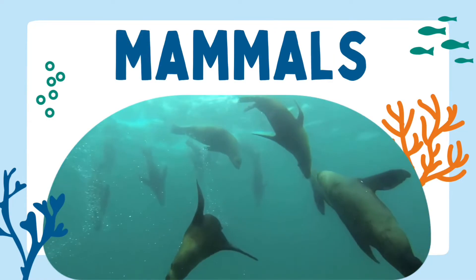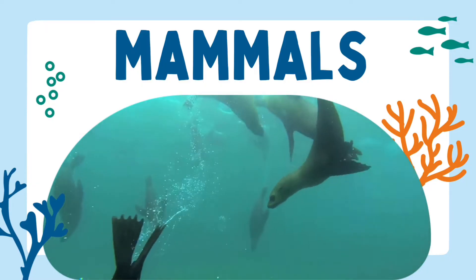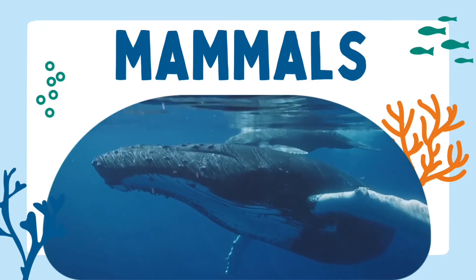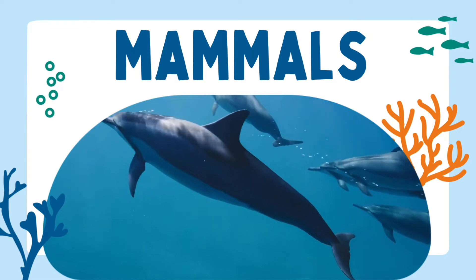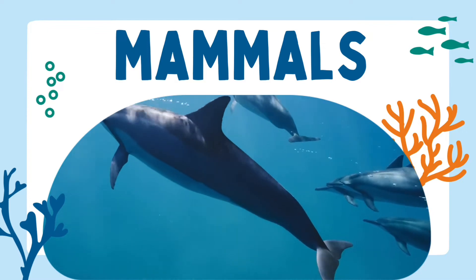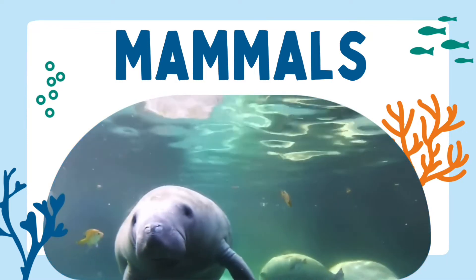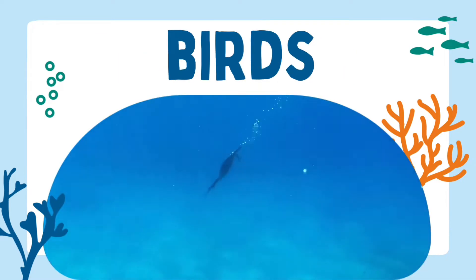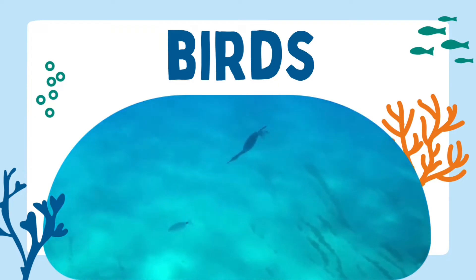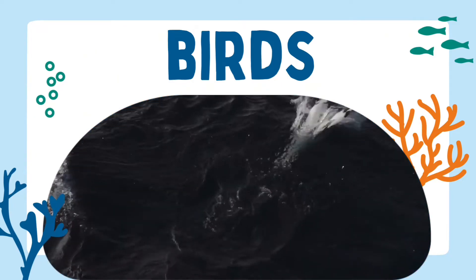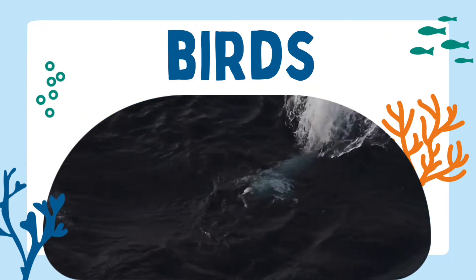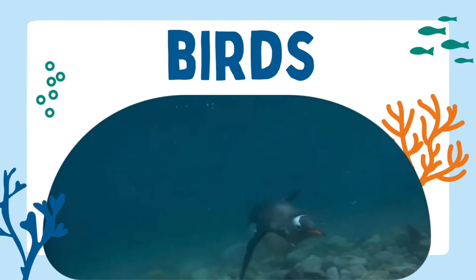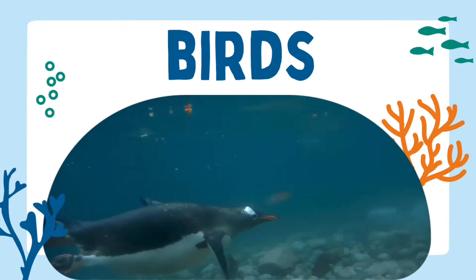Apart from fish, many other animals can be found living in or around the sunlight zone. Some marine mammals include whales, dolphins, seals and manatees. Lots of birds live close by to the sea and rely on it for their source of food, like cormorants, gannets and penguins. Can you think of any more?